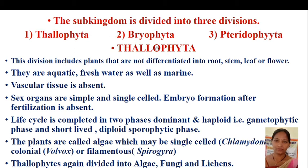Thallophytes include plants that are not differentiated into root, stem, leaf or flowers. They are aquatic — fresh water as well as marine — and need water to complete their life cycles. Vascular tissues like tracheids and vessels are totally absent. Sex organs are simple, single-celled, and embryo formation is absent. The life cycle is completed in two phases: a dominant haploid gametophytic phase and a short-lived diploid sporophytic phase.